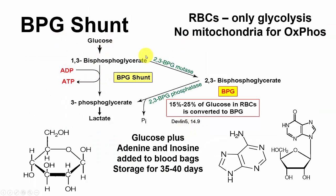Here's how BPG is made. Glucose goes to 1,3-bisphosphoglycerate, and then there's a BPG shunt in which 2,3-BPG mutase makes 2,3-bisphosphoglycerate. That can be broken down by a phosphatase to give 3-phosphoglycerate and then lactate.